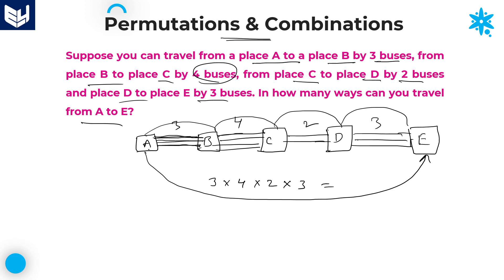To reach from place A to E, the number of ways is three into four into two into three. Three fours are twelve, twelve into two is twenty-four, twenty-four into three is seventy-two. So seventy-two possible ways are there to reach from A to E by using several buses.